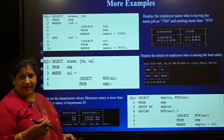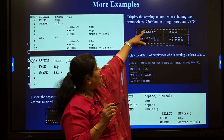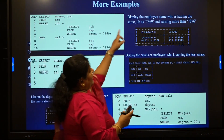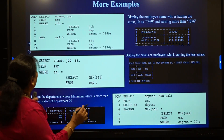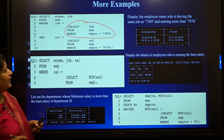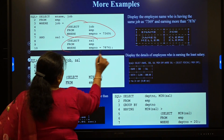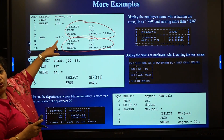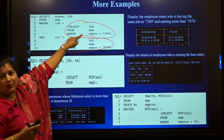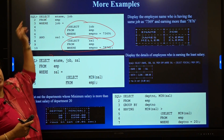Let us see a few more examples. I want to display the employee name who has the same job as employee 7369 and earns more than employee 7876. There are two subqueries: one finds the job of employee 7369, and another finds the salary of employee 7876. I combine the two using the logical AND operator — job equals this subquery AND salary is more than that subquery. These two subqueries' results are used for the outer query.